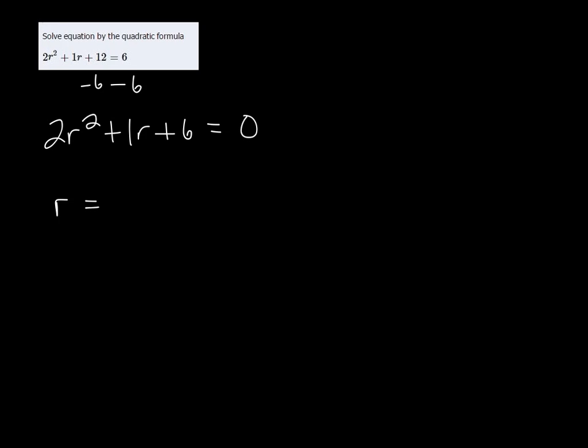Now the quadratic formula in this case would be r = -b ± √(b² - 4ac) all over 2a.